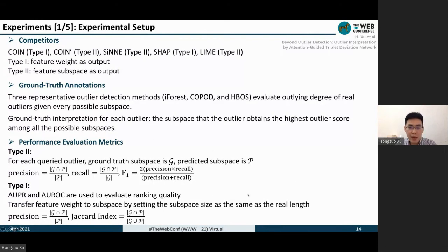For Type 1 methods, we can use area under the PR curve and area under the ROC curve to directly evaluate their ranking quality. Then we can transfer the feature weight to subspace by setting the subspace size the same as the real length of the interpretation. Then we can use precision and Jaccard index. Because precision and recall will be the same value after this transformation, we only use precision and Jaccard index.